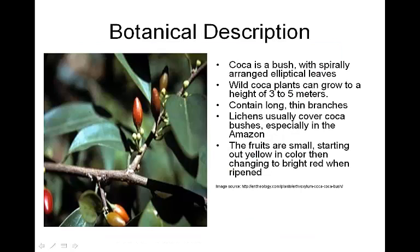Coca is a bush with a spiral arrangement of elliptical leaves that grows between 3 and 5 meters, usually. It contains long, thin branches. I thought it was very neat that lichens usually cover the coca bushes, especially those found in the Amazon, close to the equator. The fruits, as you saw in the introduction slide, are small — they start off yellow and change to bright red whenever they are ripened.